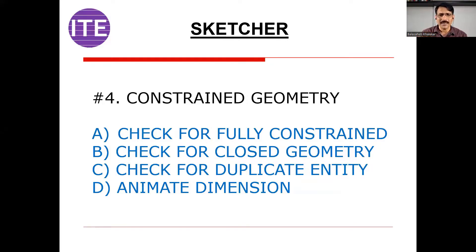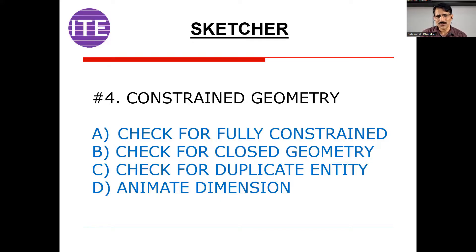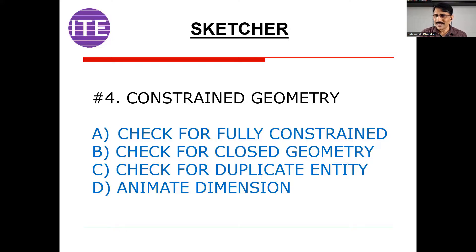Then next, check for closed geometry. When you create a sketch, it should be a closed sketch — if the sketch is open, you cannot create a solid model using commands like extrude or revolve. There are options available in CATIA software to check this. Then third, check for duplicate entities. A design engineer is working under pressure, and when you create a sketch, sometimes you create duplicate or overlapping geometries without knowing. There are tools in sketcher mode that will show you which are those duplicate entities. If an entity is duplicate, when you come out of sketcher mode, you cannot create the 3D model using extrude or revolve.